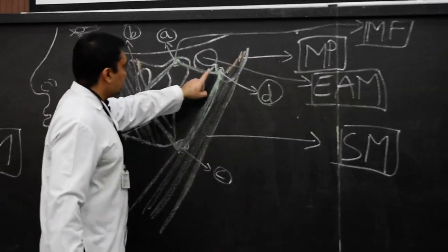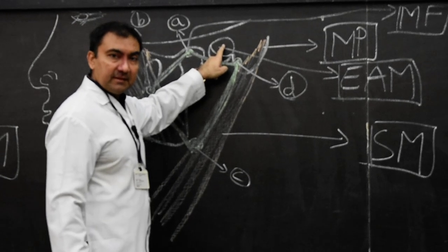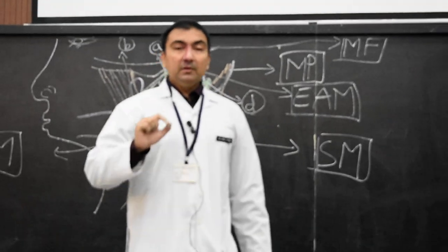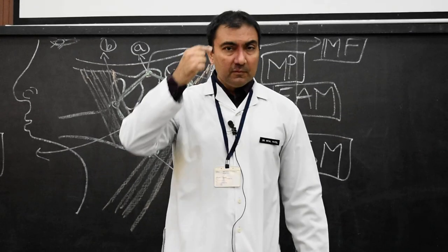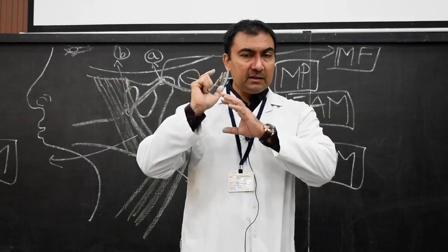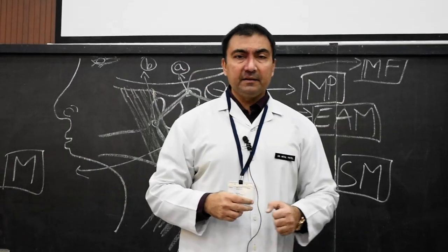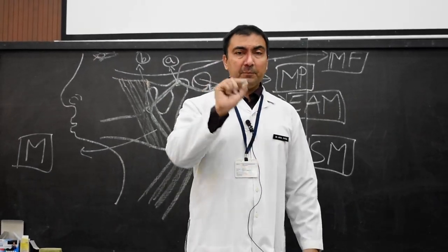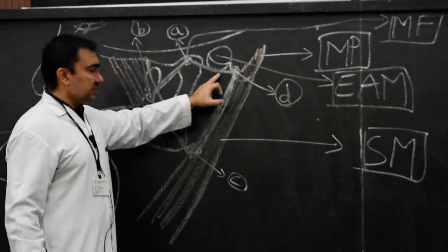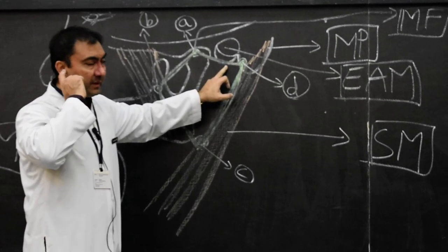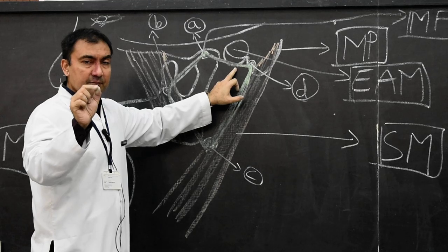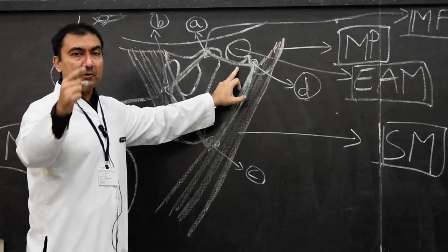The first point will be just where the external acoustic meatus is. To draw this point, we need to understand the basic concept of the external ear auricle. The external auricle has various anatomical subdivisions, but we are concerned with only one part: the tragus. The tragus is present just anteroinferior to the external acoustic meatus — it is the part of the external ear above the lobule. So the point below the tragus will be the first point for surface marking of the parotid duct.